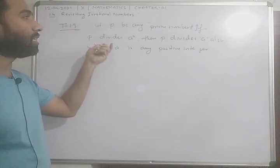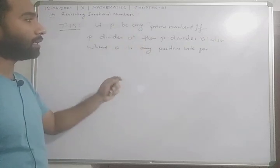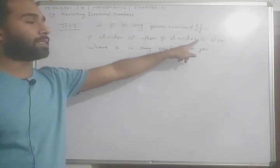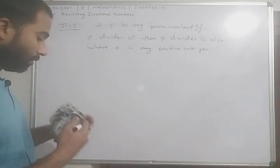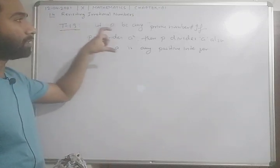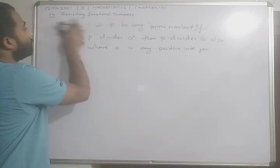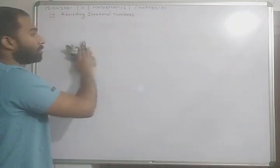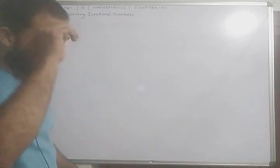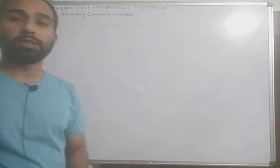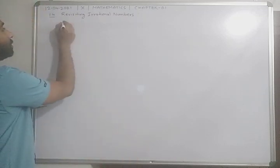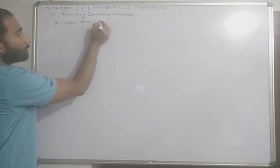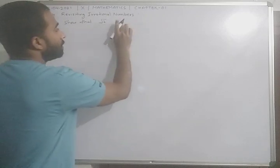We need to keep this theorem in our mind to prove that under root 2 or under root 3 is an irrational number. So let's start. How can we prove it? We are going to see the procedure to solve our problem. The very first problem is: show that under root 2 is an irrational number.